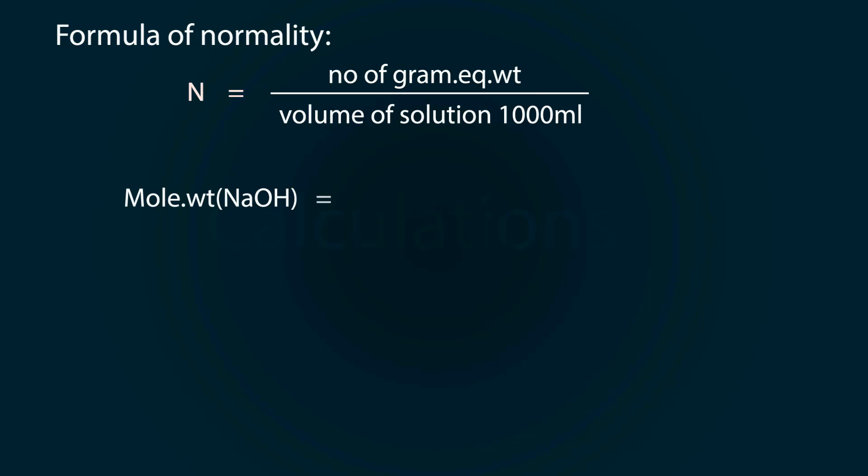Formula to find out normality is: N equals number of gram equivalent weight upon volume of solution 1000 milliliters. For this, we have to find molecular weight of sodium hydroxide.